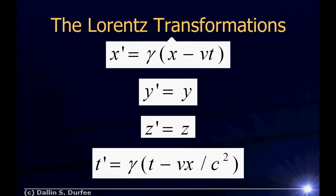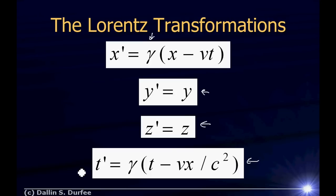The Lorentz transformations look like this: X prime looks like the Galilean X minus VT, except there's an extra factor of gamma in front of it. Y prime is Y and Z prime is Z, just like the classical case. But T prime is more complicated — it's not just T. We can use these transformations to figure out: if a firecracker goes off at some position and time, when and where did that occur in the prime frame?